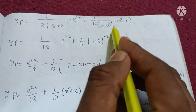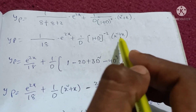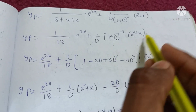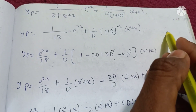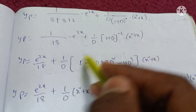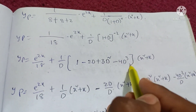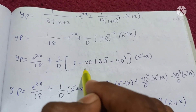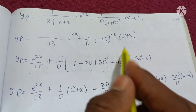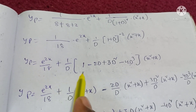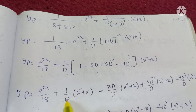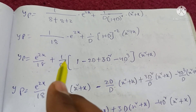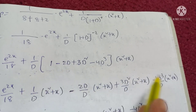For the polynomial part: 1/[D(1+D)²] · (x² + x) = 1/D · (1+D)^(-2) · (x² + x). Expanding (1+D)^(-2) = 1 - 2D + 3D² - 4D³ + ... Then apply 1/D (integration) to the result: 1/D · [1 - 2D + 3D² - 4D³] · (x² + x).